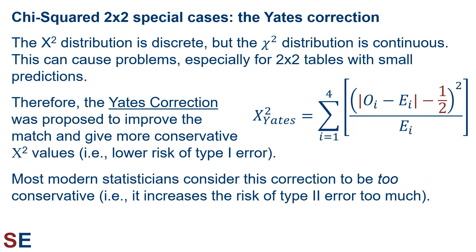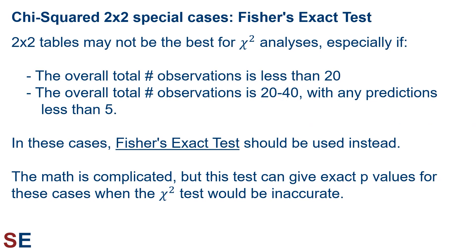The calculated chi-squared distribution is discrete, but the theoretical chi-squared distribution is continuous. This can cause problems, especially for 2x2 tables with small predictions. Therefore, the Yates correction was proposed to improve the match and give more conservative chi-squared values, lowering the risk of type 1 error. The correction involves modifying the numerator terms to use the absolute difference between the observed and expected values minus one-half, and squaring this in the sum. Most modern statisticians consider this correction to be too conservative, however, because it increases the risk of type 2 error too much. Nevertheless, this correction is often used. Additionally, 2x2 tables may not be the best for chi-squared analyses, especially if the overall number of observations is less than 20, or when the total is between 20 and 40 with any predictions less than 5. In these cases, Fisher's exact test should be used instead, as it can give exact p-values when the chi-squared test would be inaccurate.